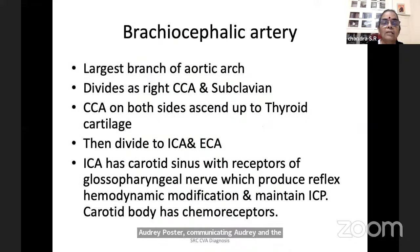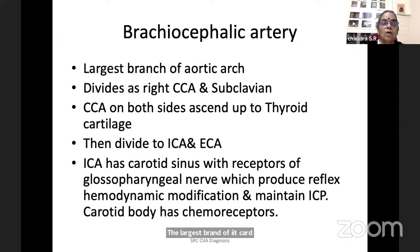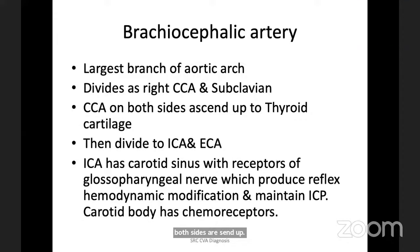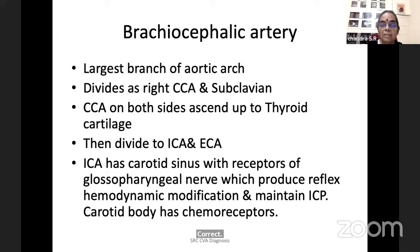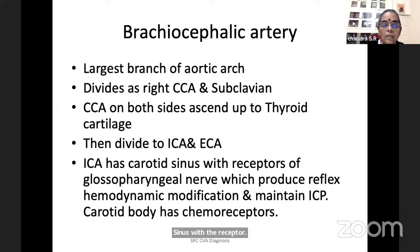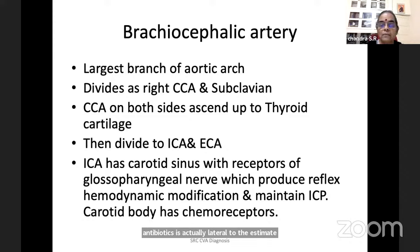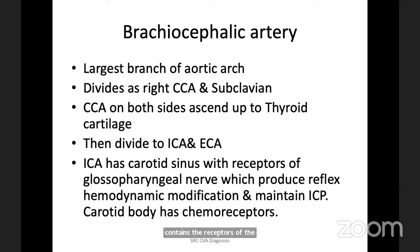The brachiocephalic artery is the largest branch of the aorta, divides as right common carotid and right subclavian. Common carotid artery on both sides ascends up to the thyroid cartilage, then divides into internal carotid and external carotid. Internal carotid artery has the carotid sinus with receptors. Internal carotid artery is lateral to the external carotid artery, but because of the carotid sinus shows a bulge at the beginning, which contains receptors of the glossopharyngeal nerve that produce reflex hemodynamic modifications and maintain intracranial pressure.